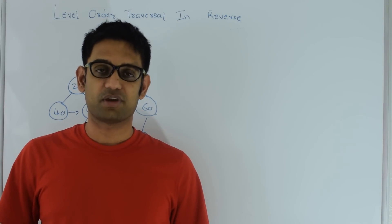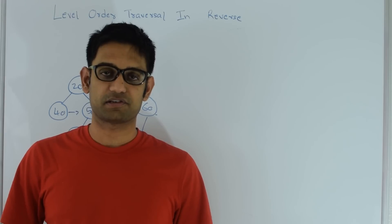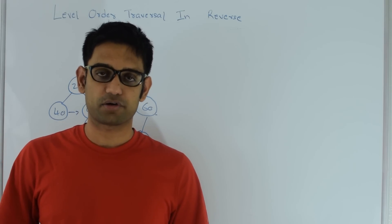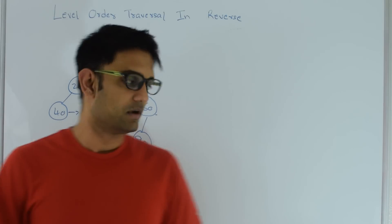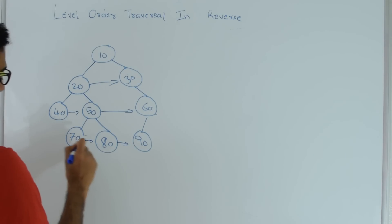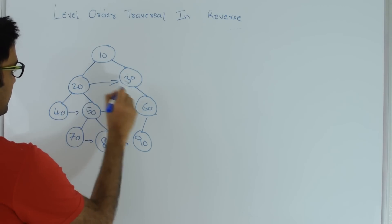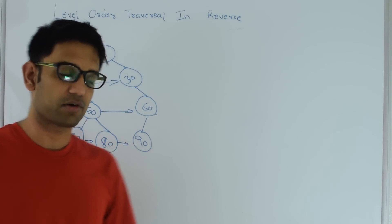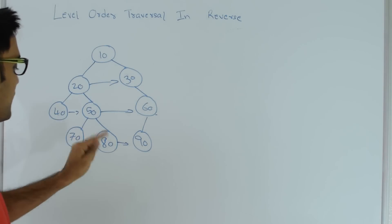Hello friends, my name is Dushar and today I'm going to talk about level order traversal in reverse direction. The question is: given a binary tree, you need to print out the level order traversal going from bottom to up. For this binary tree, I would be printing 70, 80, 90, 40, 50, 60, 20, 30, and then 10. Notice how this is different from our regular level order traversal where we print 10, 20, 30, 40, 50, 60, 70, 80, 90.